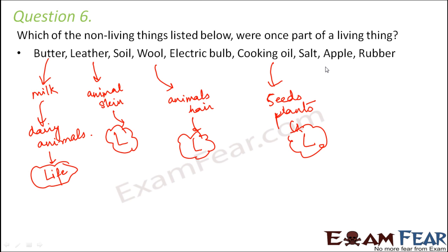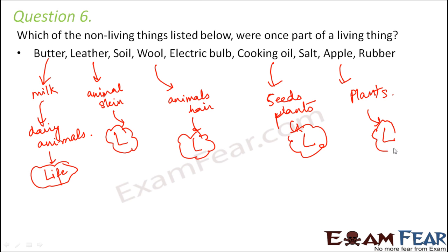Salt is normally obtained from oceans, but it was never obtained from a living thing. Apple is obtained directly from plants, and plants are living. Rubber is obtained from the latex of the rubber tree, which is also a plant and was living. So in summary, butter, leather, wool, cooking oil, apple, and rubber were all obtained from things that were once living.